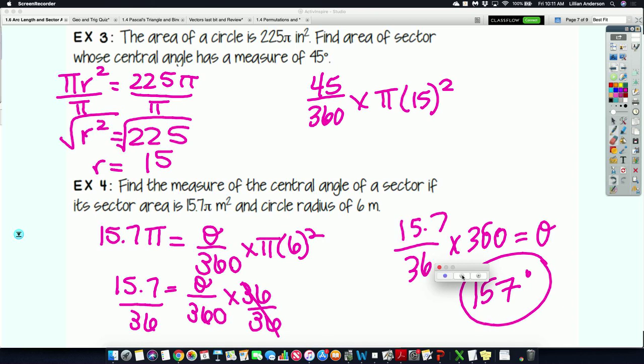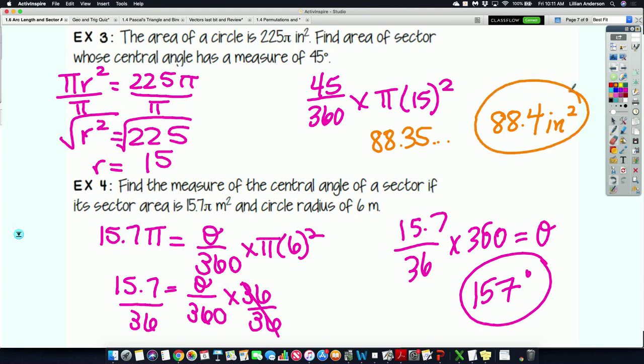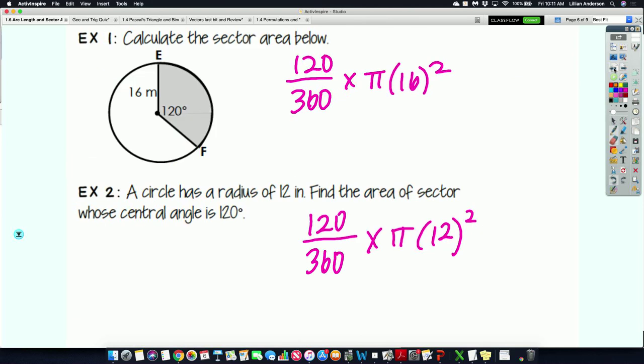So going back to example 3, where you were asked to find the area of the sector. We had found the radius by using the fact that the area was 225 pi. We found the radius by setting it equal to pi r squared. We get the radius of 15 by plugging it into the formula. We will get 88.35, which rounds to 3 significant figures as 88.4. And since this is the area of the sector, it is inches squared.